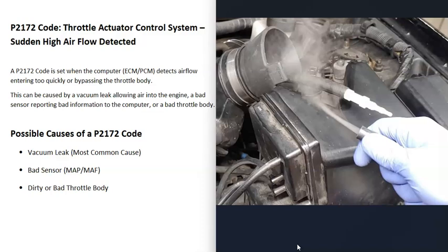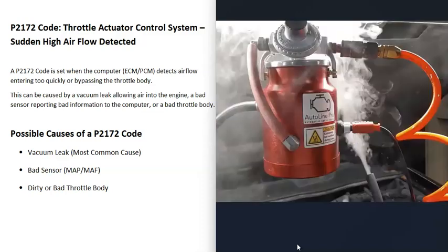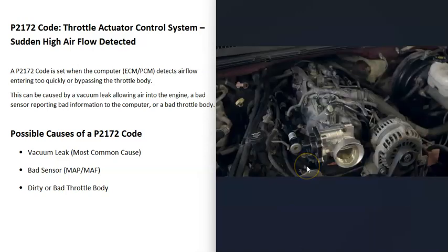You can make these smoke machines yourself — there are DIY videos on how to build one for as little as $5 to $10. There are also low-cost units available on eBay or Amazon. To summarize, the first cause to investigate is a vacuum leak where air is entering the engine around the throttle body.